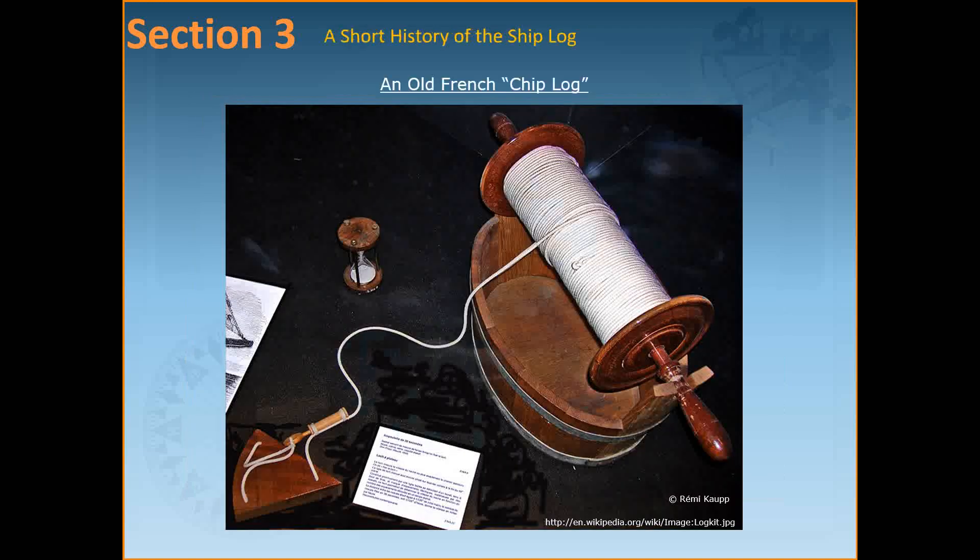Before going into that, let me briefly discuss how the ship's log has evolved over time. The old system of measuring speed and distance was the old French chip log, which was the first developed around 1600. It consisted of a pie-shaped log chip with a lead weight on its curved edge that caused it to float upright and resist movement.